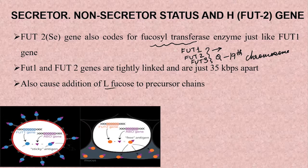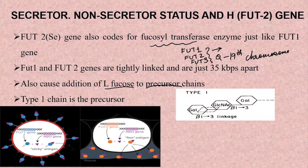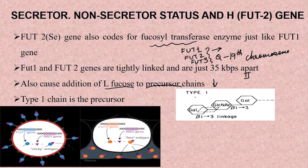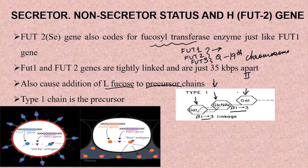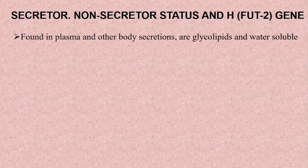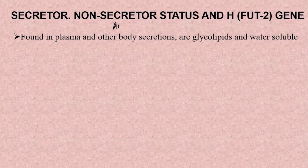There are three genes — FUT1, FUT2, and FUT3 — present on the same region, all coding for the fucosyltransferase enzyme. The FUT2 gene also causes addition of L-fucose to a precursor chain, but in this case the precursor chain is the type 1 chain. In the case of the H gene, the precursor chain is the type 2 chain with beta 1,4 and beta 1,3 linkages, whereas in the type 1 chain, galactose, N-acetylglucosamine, and galactose are attached with beta 1,3 linkages only.